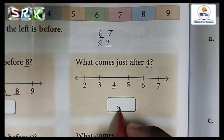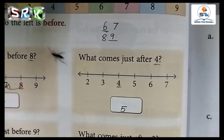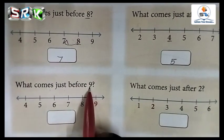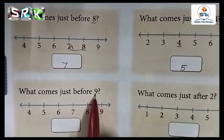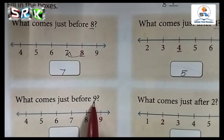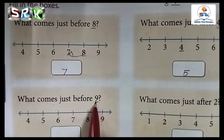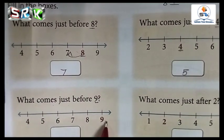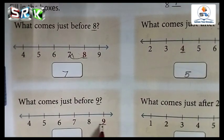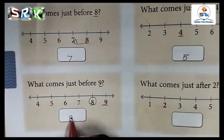Next one: what comes just before 9? Nine before numbers — nine, eight, seven, six, five, four, three, two — so nine before is eight. Write 8 neatly in the box. Here on the number line, nine before number is eight, so write 8 neatly in the box.